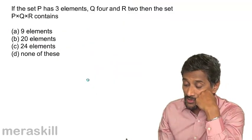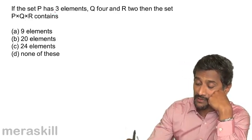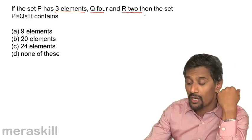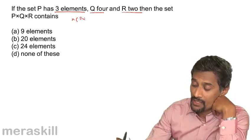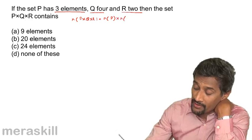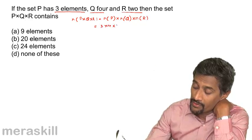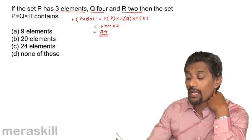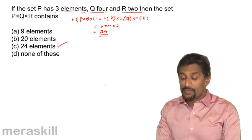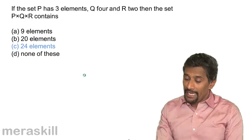Let's take an example: if set P has 3 elements, set Q has 4, and set R has 2, then n(P cross Q cross R) equals n(P) times n(Q) times n(R), which is 3 times 4 times 2 equals 24. So there will be 24 elements in P cross Q cross R.